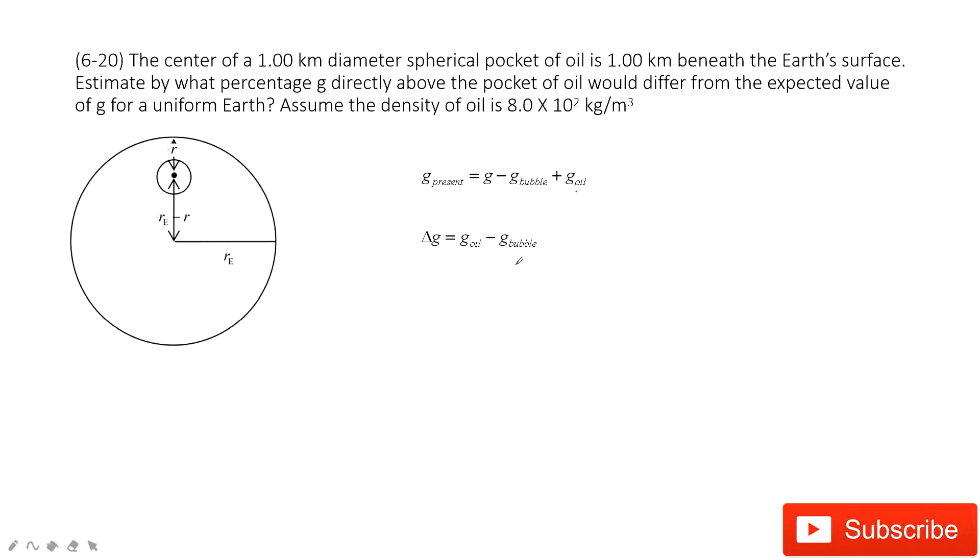And then next one, how can we find the g? This g acceleration due to gravity comes from the gravitational force. So g_oil is this capital G, this is constant times the mass of the oil, this one, divided by r squared.